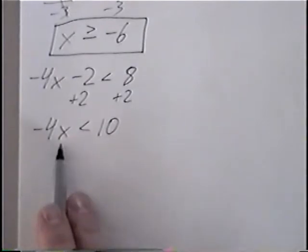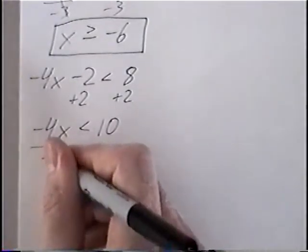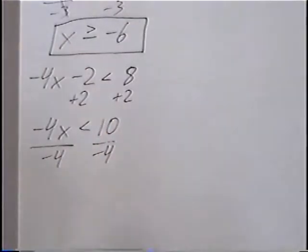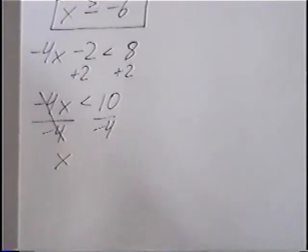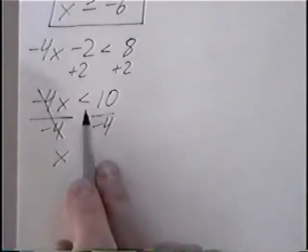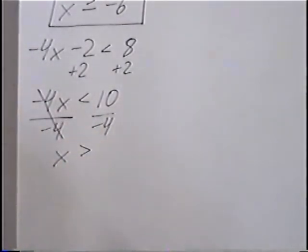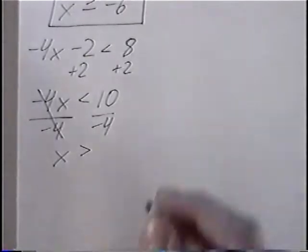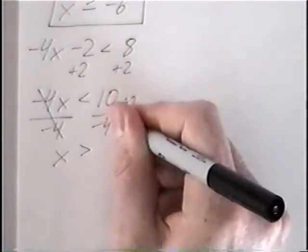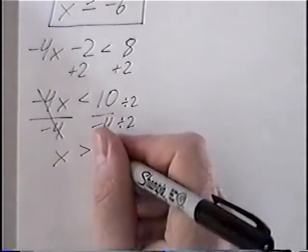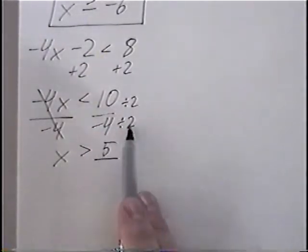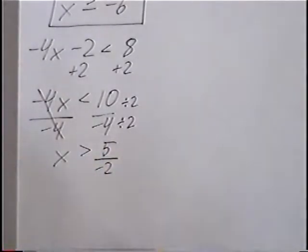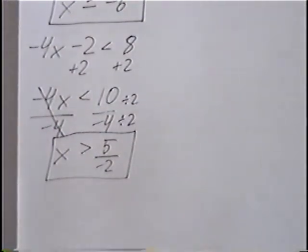The last step: we have negative 4 times x. To get rid of multiplying by negative 4, we can divide by negative 4. The negative 4s would cancel and x would come down. Again, if you divide by a negative number, the inequality would switch around. Negative 4 does not go into 10 evenly, but we can reduce this fraction — each number we can divide by 2. 10 divided by 2 would be 5, and negative 4 divided by 2 would be negative 2. So the final answer is x is greater than negative 5 over 2.